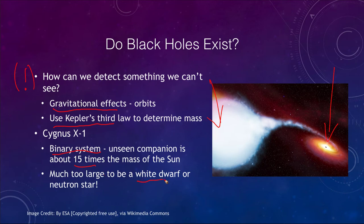That is much too large to be a white dwarf — more than 10 times larger than a white dwarf could be — and about three times larger than a neutron star could possibly be. So this cannot be a white dwarf, cannot be a neutron star, but it can be, and likely is, a black hole. This was one of the earliest detections and inferences that a black hole would exist.